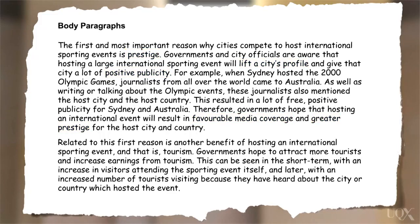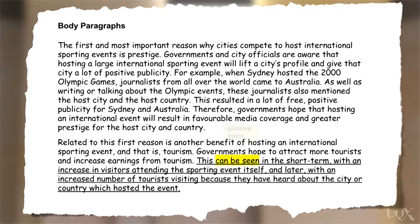Now let's look at grammatical range and accuracy. In body paragraph two, you can see how the writer uses complex sentences and a range of grammatical structures, such as passive voice, and creates complex sentences with a subordinate conjunction like 'because', to show that they have a good command of English grammar.